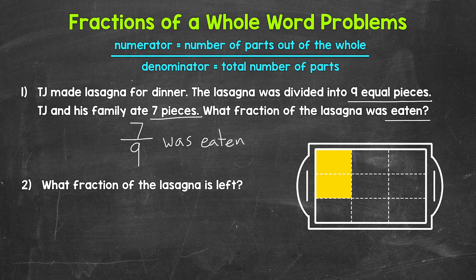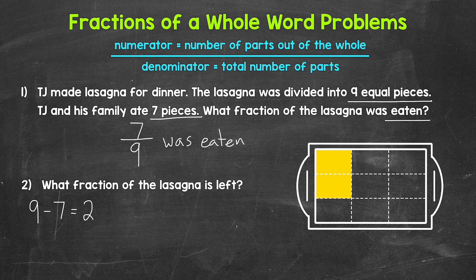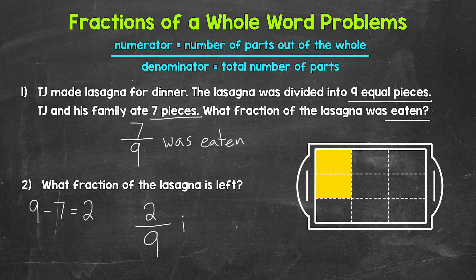Let's move on to number two: what fraction of the lasagna is left? If there were nine total pieces and seven were eaten, we figure this out by doing nine total pieces minus the seven pieces that were eaten, which gives us two pieces left. The denominator is nine again, because that's the total number of pieces. Our numerator is two — the number of pieces left. Two pieces out of the nine total pieces are left, so our fraction is two ninths.